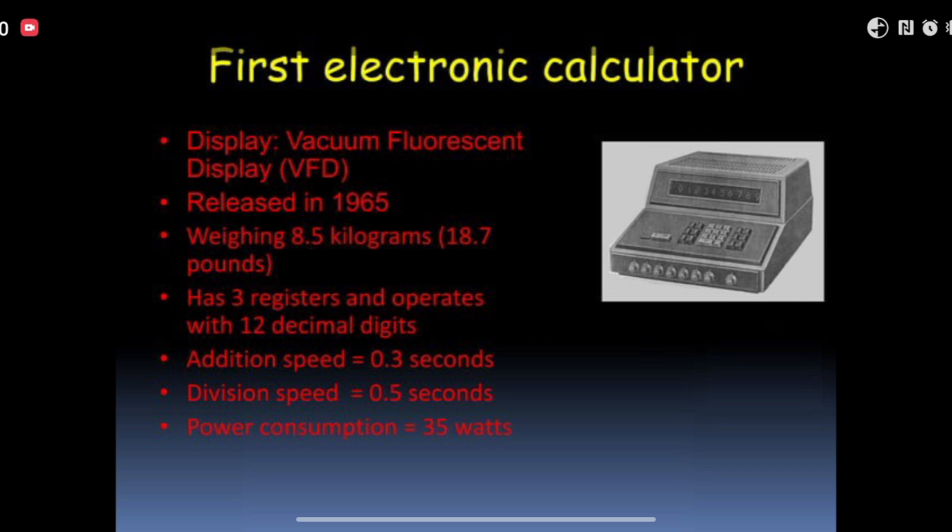The first electronic calculator, that is the one in this picture, had a fluorescent display called VFD, released in 1965. Weighing 8.5 kg, it had three registers and operated with 12 decimal digits. Addition speed was 0.3 seconds, division speed was 0.5 seconds, and power consumption was 35 watts.